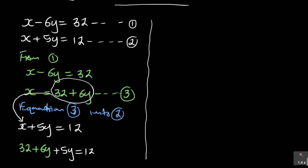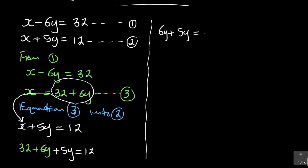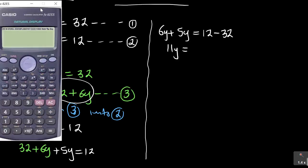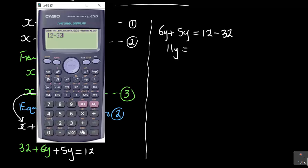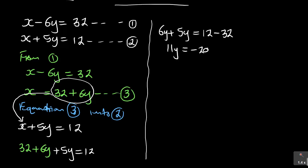So 6y plus 5y equals 11y, and 12 minus 32 equals negative 20. Therefore 11y equals negative 20. To remove 11 from y, divide both sides by 11 — division being the opposite of multiplication — giving y equals negative 20 over 11. This is the value of y.